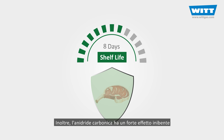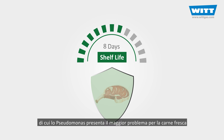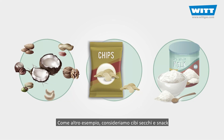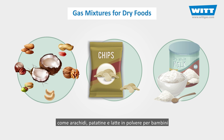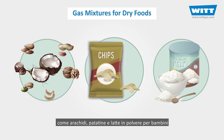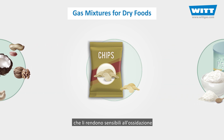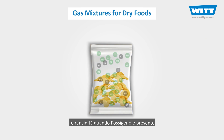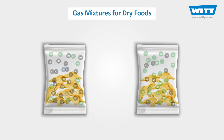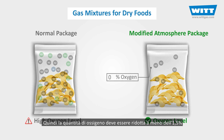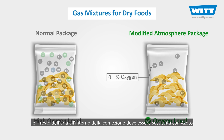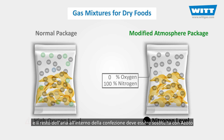Also, carbon dioxide has a strong inhibiting effect on the growth of bacteria, of which Pseudomonas presents the greatest problem for fresh meat. As another example, let's consider dry foods and snacks like peanuts, potato chips, and baby milk powder. These foods contain unsaturated fats that make them sensitive to oxidation and rancidity when oxygen is present. So the oxygen amount must be reduced to under 1.5%, and the rest of the air inside the package must be replaced with nitrogen.